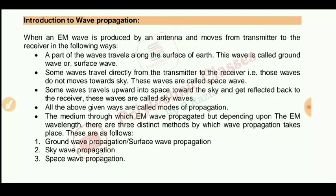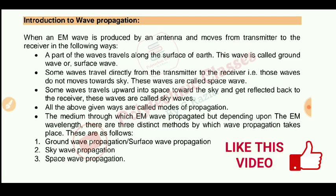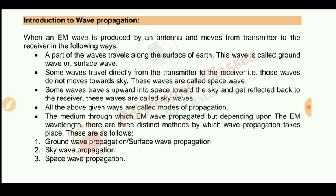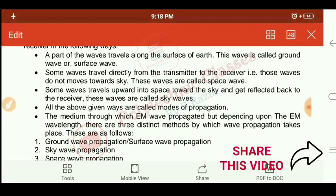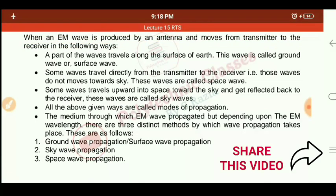When an EM wave is propagated from an antenna, the current or voltage at the transmitter is converted into electromagnetic waves using an antenna. The antenna works as a transducer, which changes electrical energy — electrical signals — into electromagnetic waves, which are then transmitted from the transmitter toward the receiver.